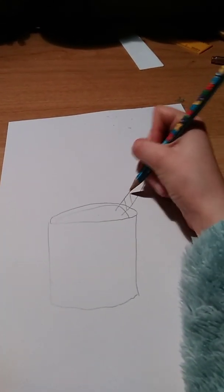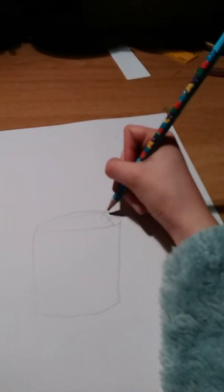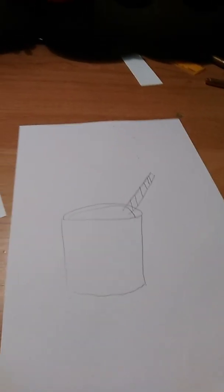And lines going off because it's a straw, you have to have lines.